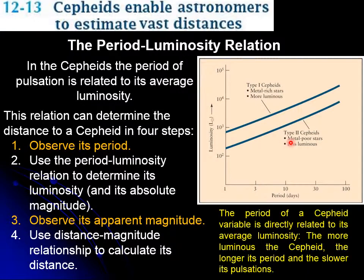A metal poor star means that these stars were formed when there was no recycled gas from a previous star, so they are kind of original stars produced a long time ago.